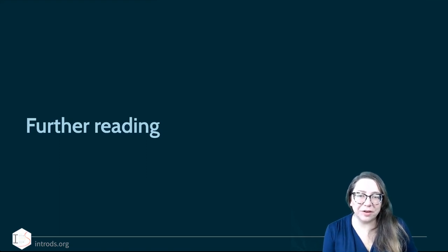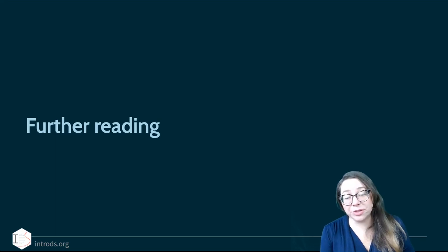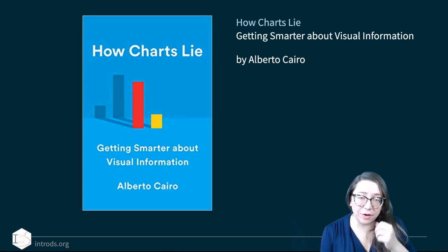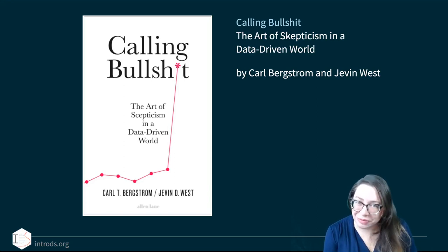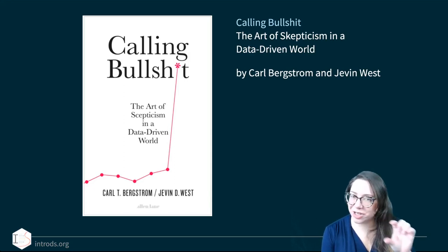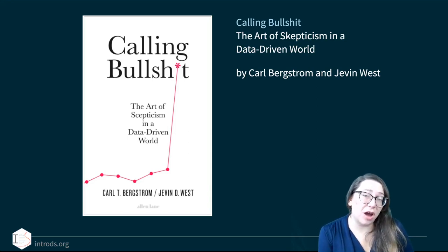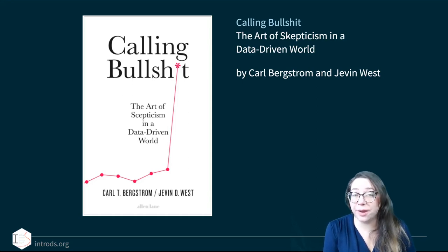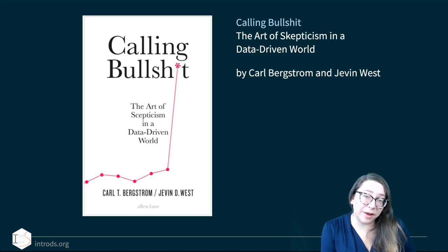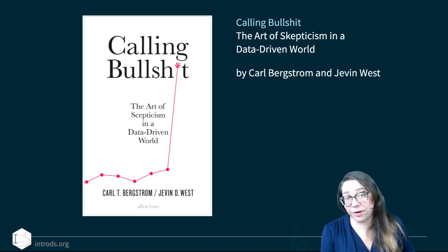If you're interested in misrepresentation of data and how to do better, two book recommendations: one is Alberto Cairo's 'How Charts Lie,' and the other is 'Calling Bullshit' by Carl Bergstrom and Jevin West. Both are enjoyable, quick reads, full of case studies of miscommunication of data and findings — sometimes with malicious intent, sometimes simply due to incompetence. Importantly, both books go beyond the case studies to explain how to do better.